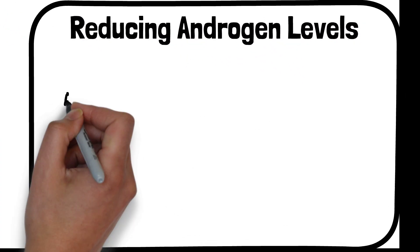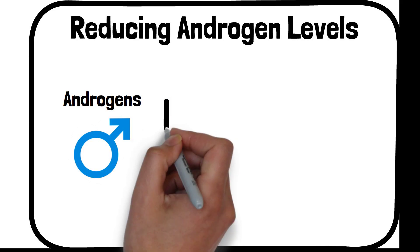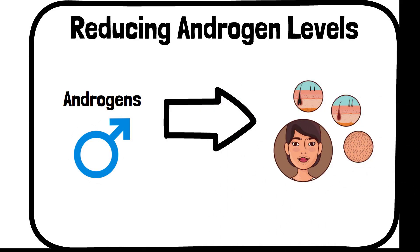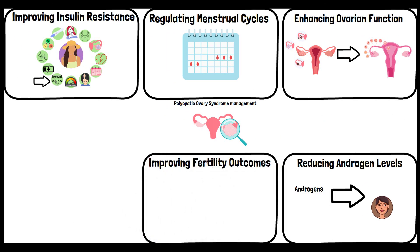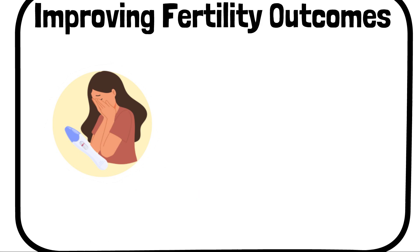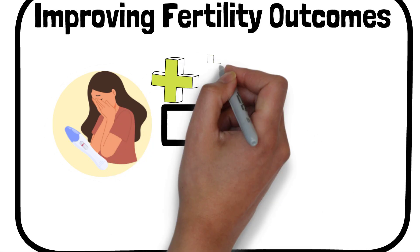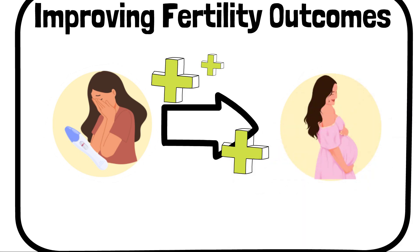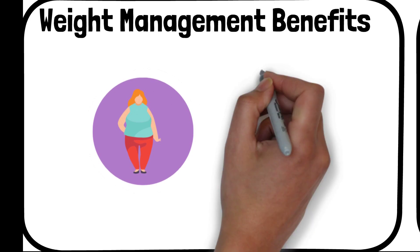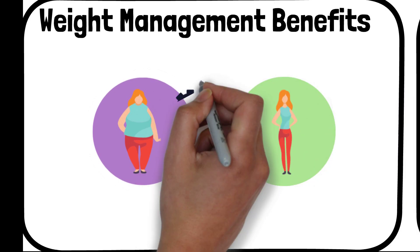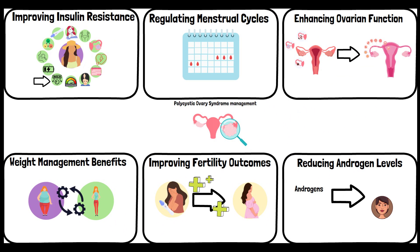High levels of androgens, or male hormones, are a common feature of PCOS and can lead to symptoms like hirsutism — excess hair growth. Inositol helps in balancing hormone levels and reducing excess androgens, alleviating some of the symptoms associated with PCOS. PCOS is also one of the leading causes of infertility due to anovulation. Inositol's role in improving ovulation and overall ovarian function makes it a valuable supplement for enhancing fertility. Additionally, by improving insulin sensitivity, inositol can aid in weight management, which is a key aspect of managing PCOS.